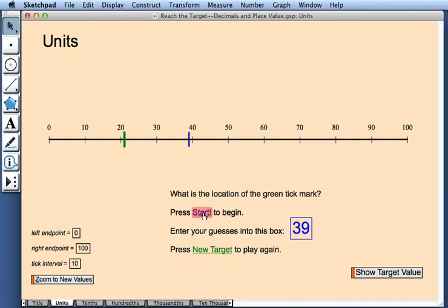To begin, I'll press start. Now I'll enter my guess for the location of the green tick mark into this blue box. I think the tick mark sits at 23.